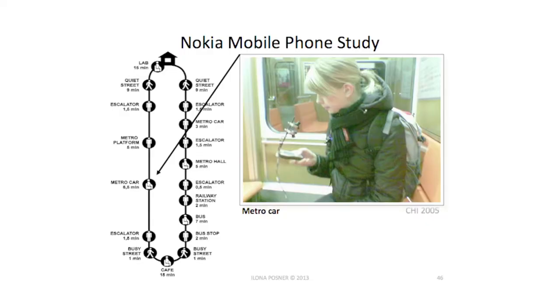Here's an interesting example of a study that Nokia did. They followed people and figured out where they were using their phones and how. They had video cameras — this lady has a battery pack and a video camera, and every time she uses her phone it gets recorded. There are questions about the amount of interference you can have with users, but you get really rich, valuable data from this kind of very expensive, very in-depth study.